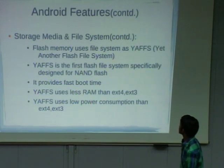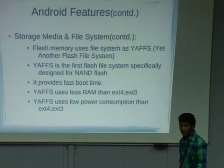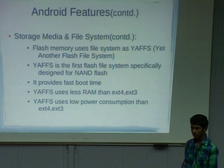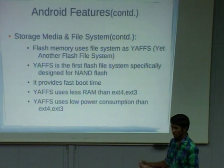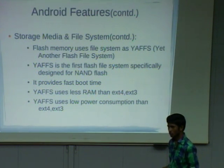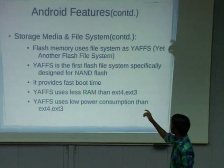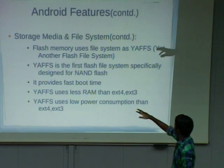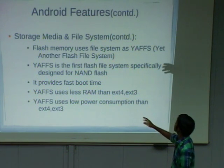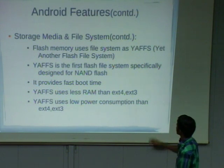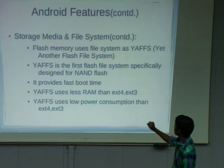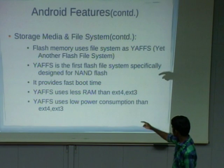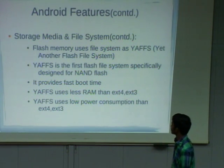Coming to the file system. Android supports Linux-based file systems like EXT4 and EXT3. But EXT4 consumes more power and occupies more space in RAM. For that purpose, they created another flash file system called YAFFS. Its features include being mainly designed to support NAND flash memory and providing fast boot time. Flash memory is divided into different pages — each page contains 512 bytes of memory and 16 bytes of spare space used for maintaining the status of that page, such as whether it is corrupted.